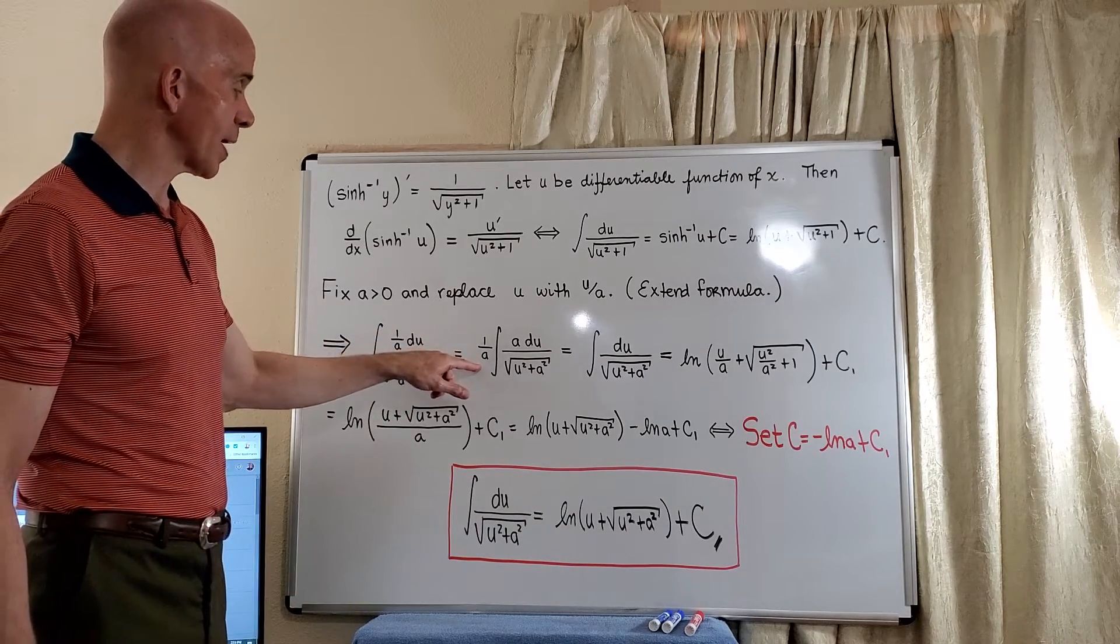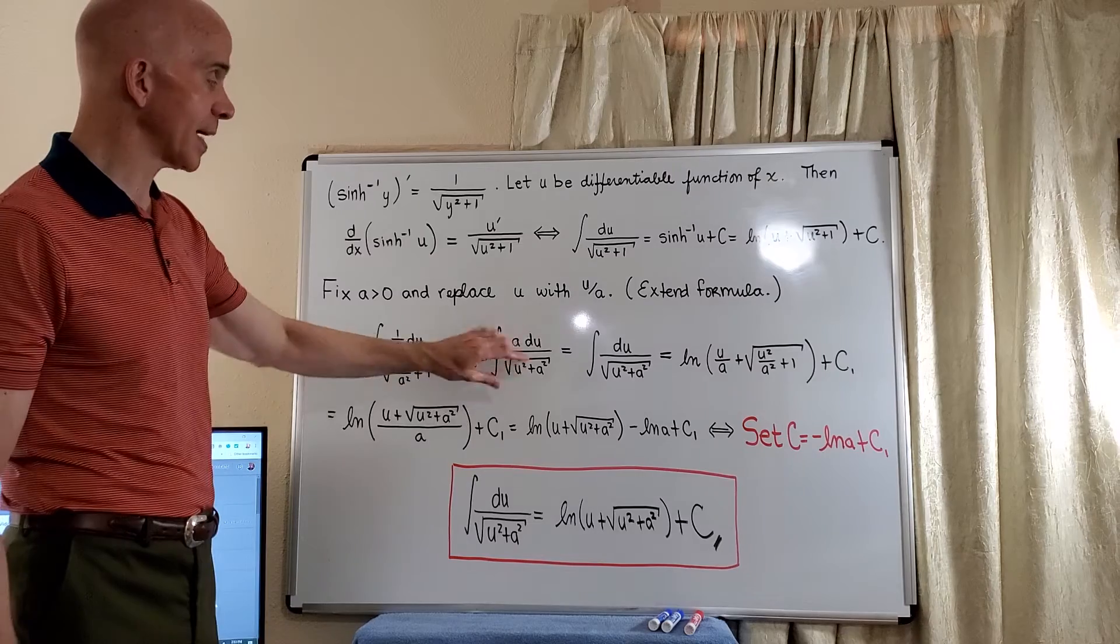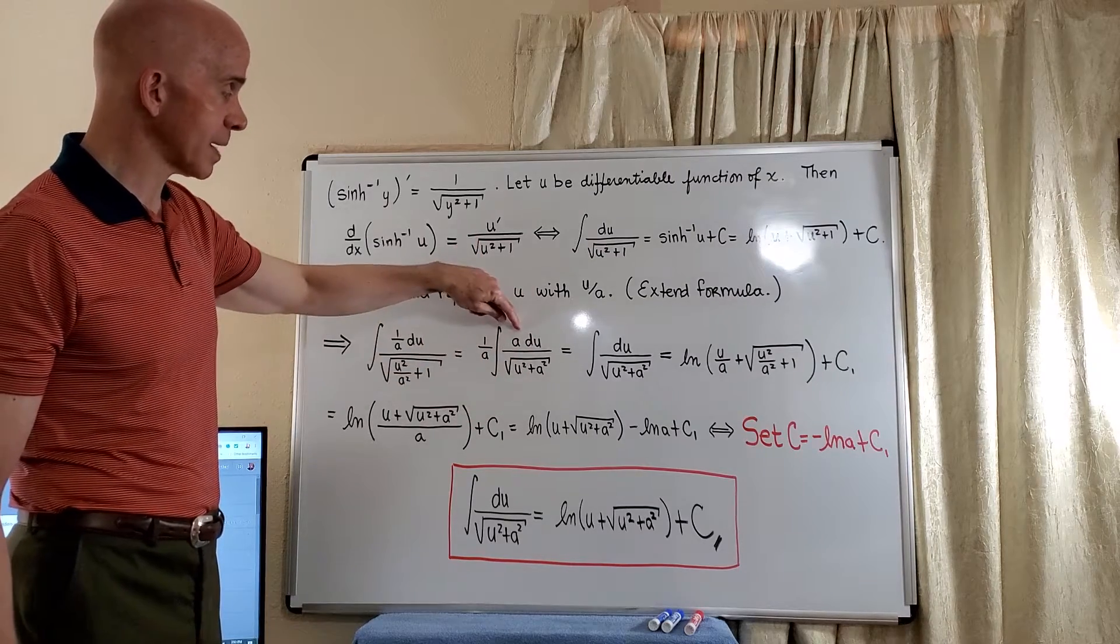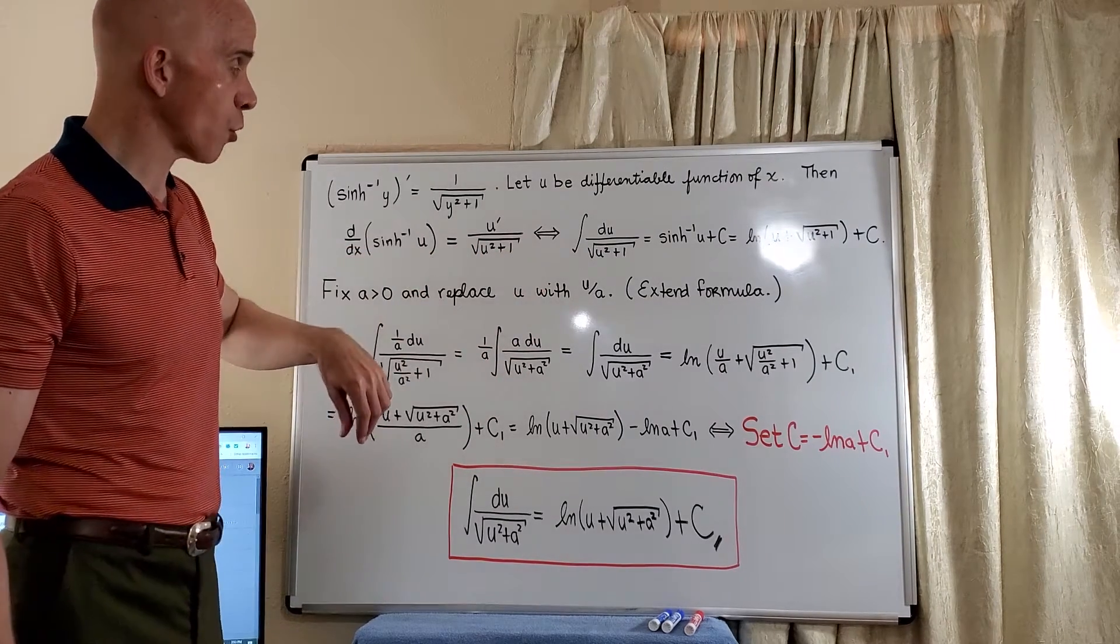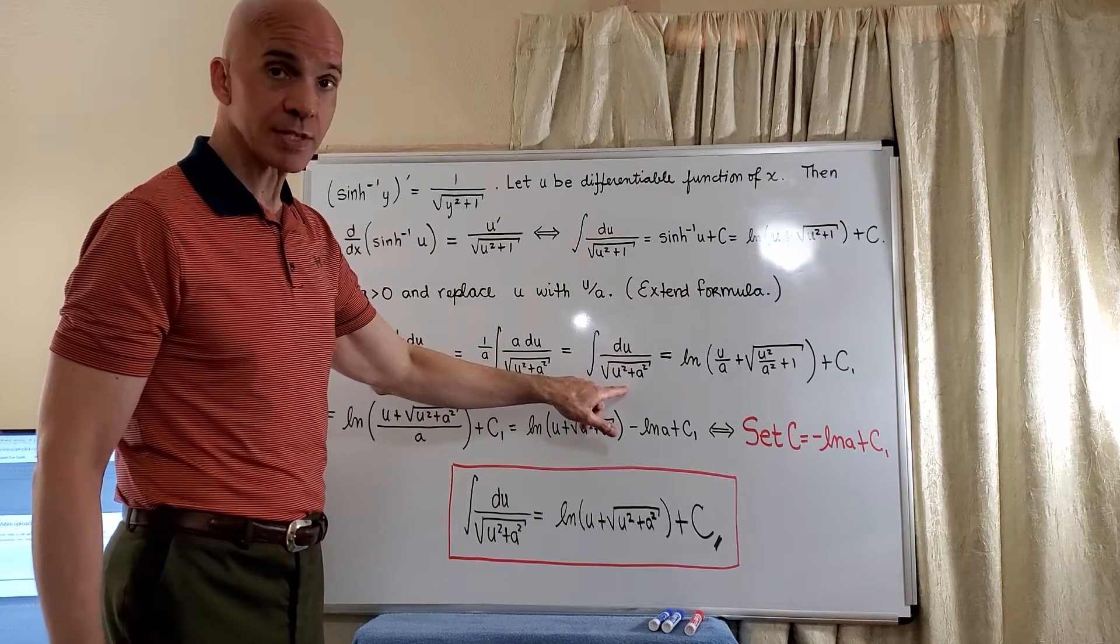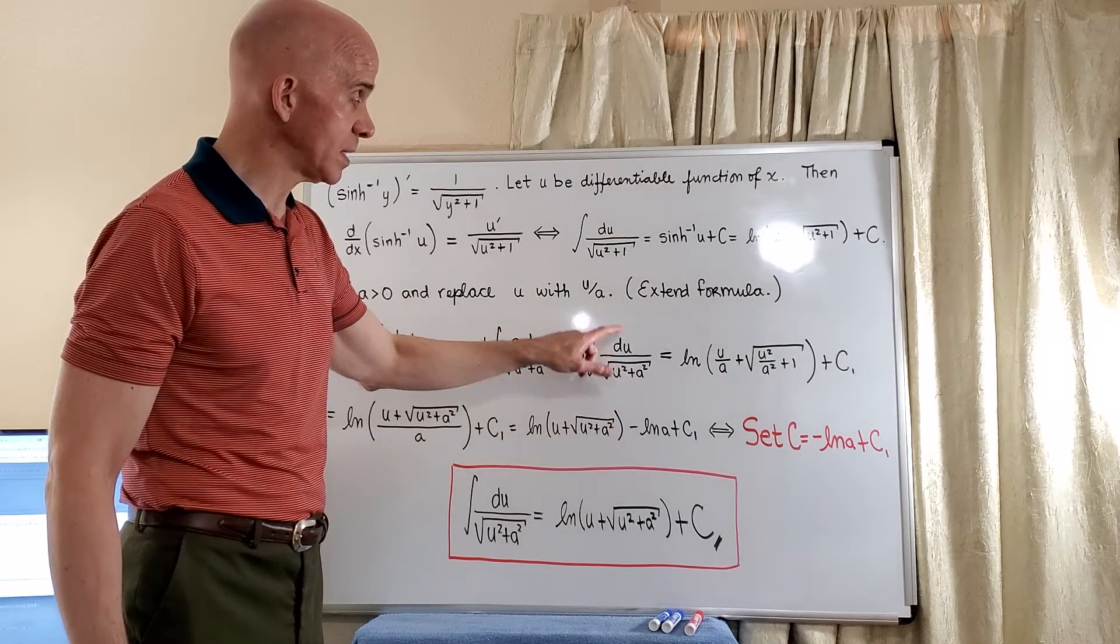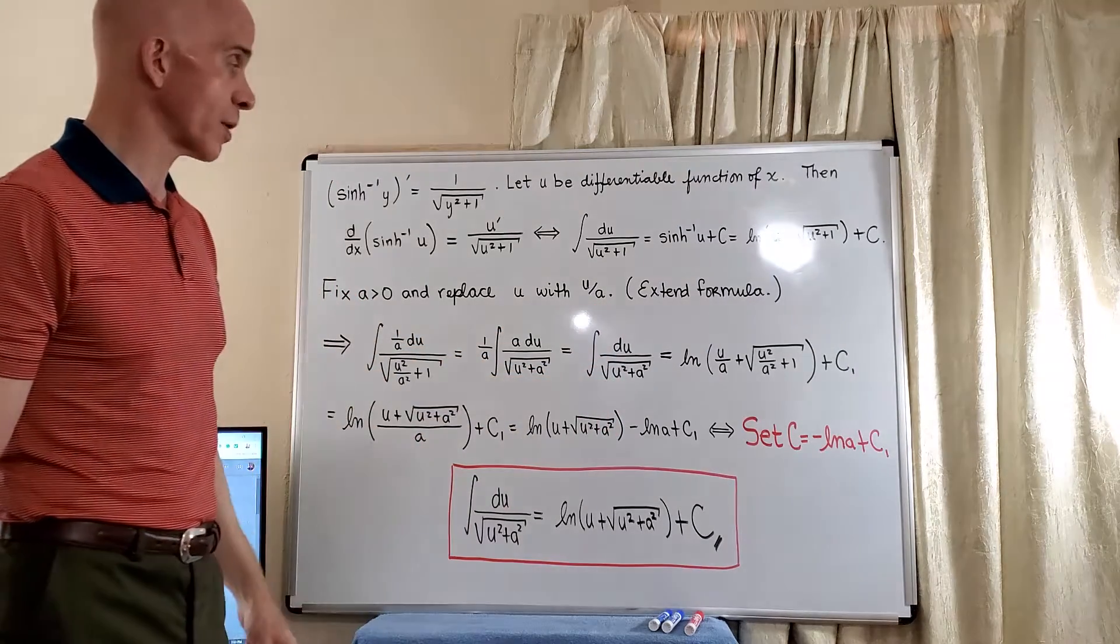Now of course we factor the 1 over a, and then we get a common denominator. And then we flip the a upstairs, and of course the a's absorb. And now we have an integral that looks like this. That is the integral of du over the square root of u squared plus a squared.